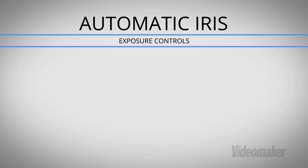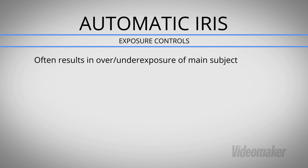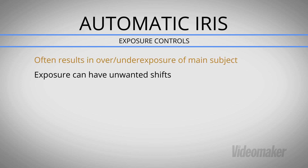What about auto iris? It's tempting to set your iris to automatic, but this is not the best technique for most situations. Letting the camera decide what portions of your scene are relevant often results in overexposure or underexposure of your main subject. Another issue is that the exposure can shift rapidly, especially if your shot is moving and bright highlights and dark shadows are passing through your scene. In general, you want to set your iris manually.